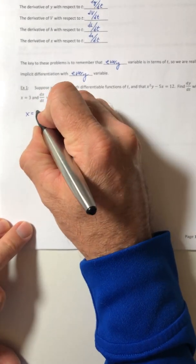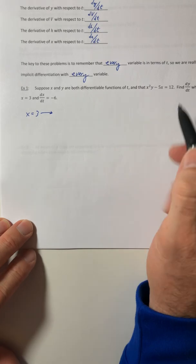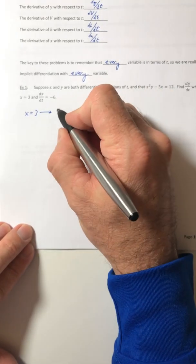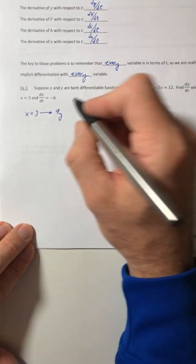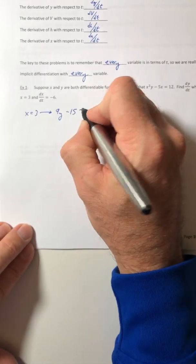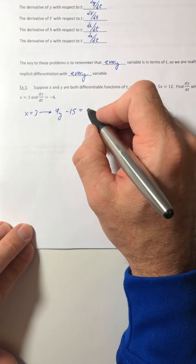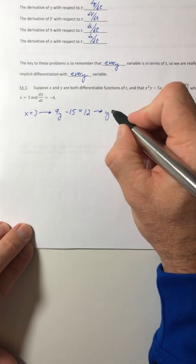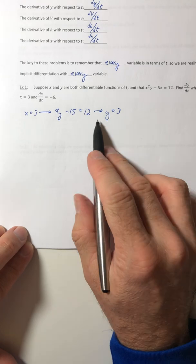When x is equal to 3, because we might need a y value, so let's go ahead and get it. Plug in the 3 for the x, so you get 9y - 15 = 12, which gives us y is also equal to 3.